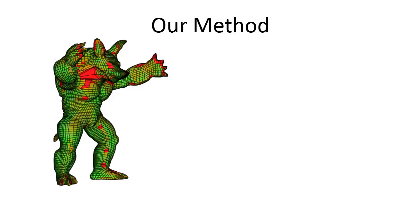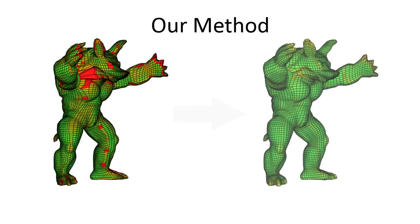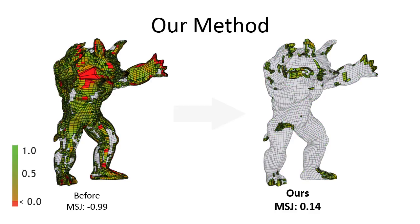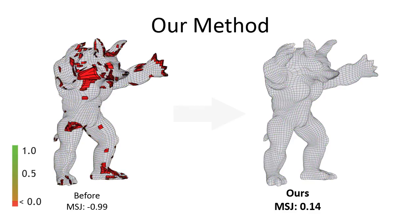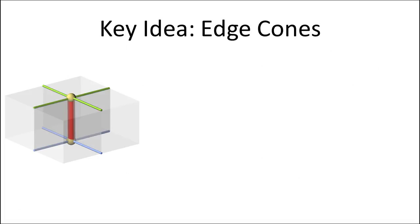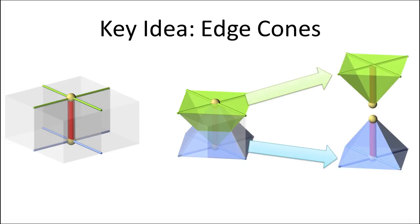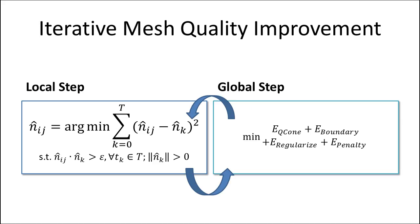We introduce a novel framework for optimizing hex mesh quality, capable of generating inversion-free, high-quality meshes from extremely poor initial inputs. We recast hex quality improvement as an optimization of the shape of overlapping cones of tetrahedra surrounding every directed edge in the hex mesh, and show the two to be equivalent. We iteratively improve cone quality.